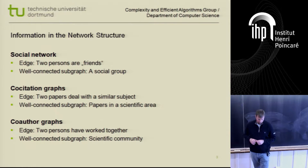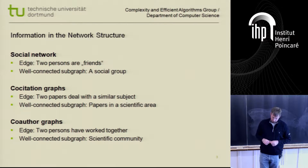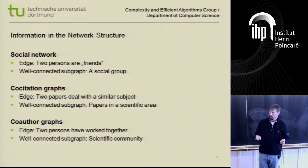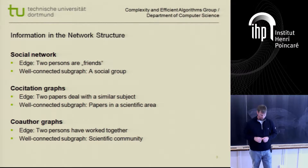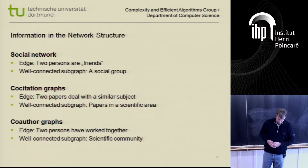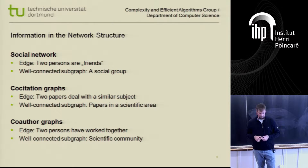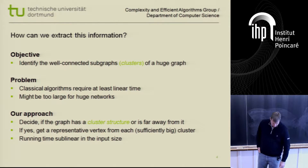If you think about co-citation graphs, the nodes are papers, and there's an edge if they are cited by a third paper, which means that most likely these two papers deal with a similar subject. So in this case, a well-connected subgraph is something like a set of papers in a scientific area. In co-authorship graphs, an edge corresponds to two people who have worked together, so a well-connected subgraph is something like a scientific community.